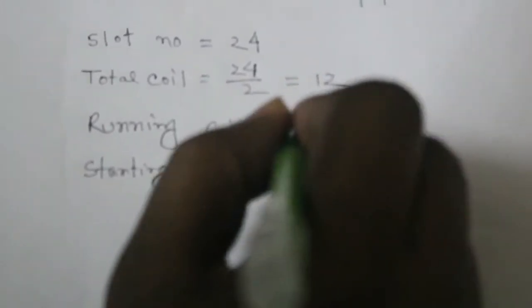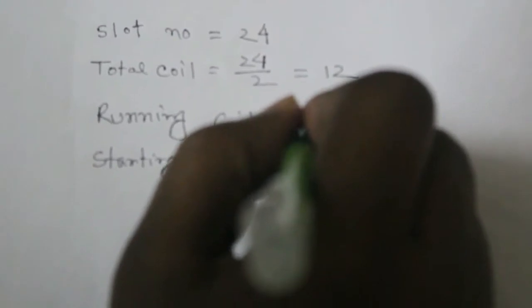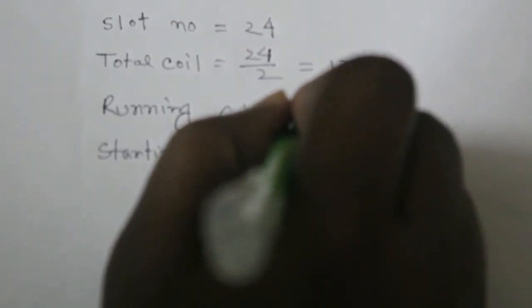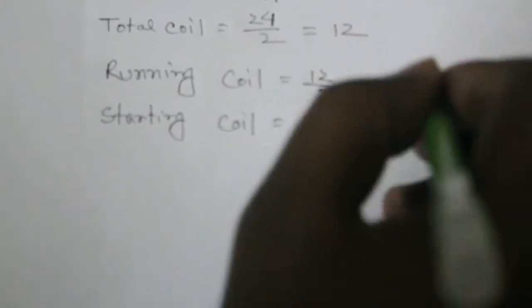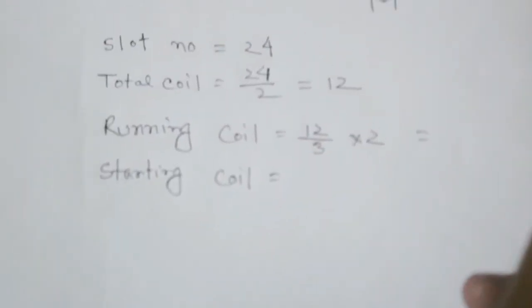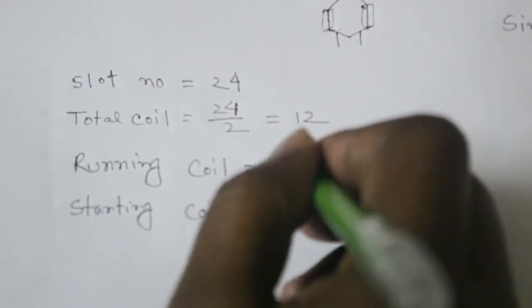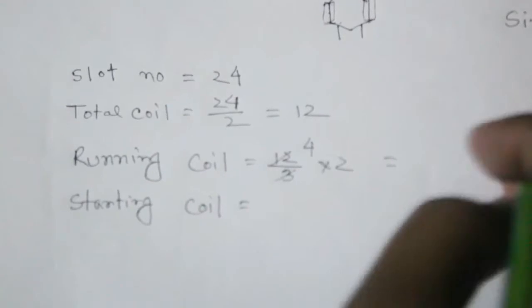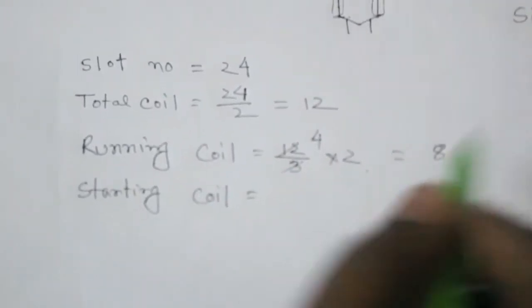First, total coils divided by three equals four per part. We take two parts for the running coil: four into two equals eight. So the running coil has eight coils total.